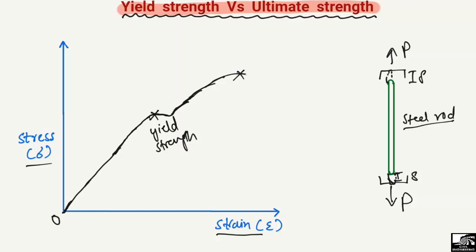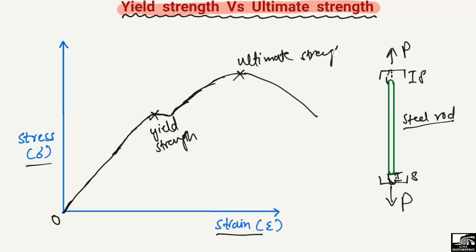After the yield point, the stress decreases and then after some time it starts to increase again, reaching up to a maximum value. This point where it reaches the maximum value is known as the ultimate point — or the ultimate strength of the steel rod. Beyond that it decreases again, and the point where the steel rod fractures is called the fracture strength.